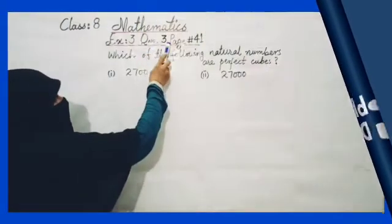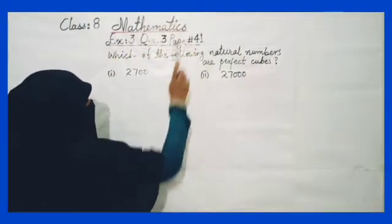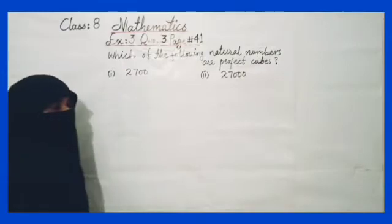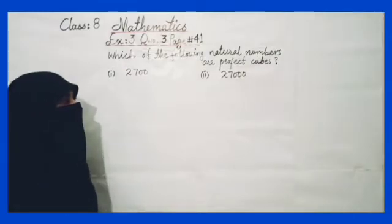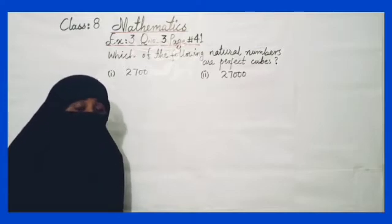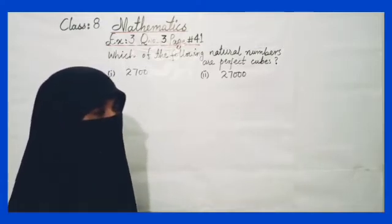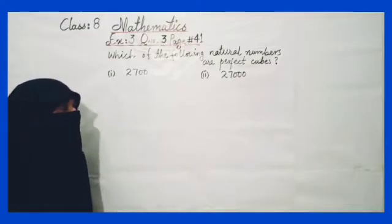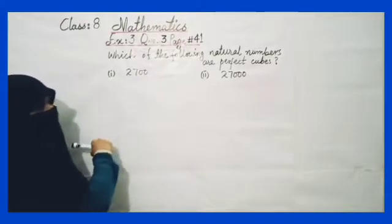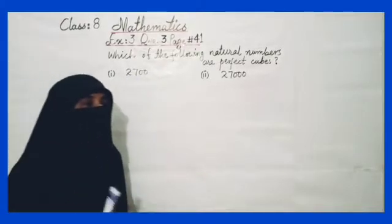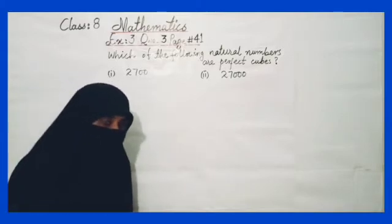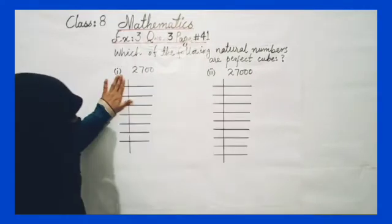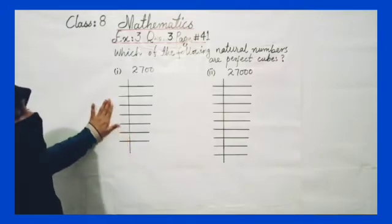Now let's move to our solution board for question number 3 of exercise 3 from page 41. The question is: which of the following natural numbers are perfect cubes? We need to find out whether the given numbers are perfect cubes or not by finding their cube roots. We always find cube roots using the prime factorization method, where we find prime number factors of the given number.